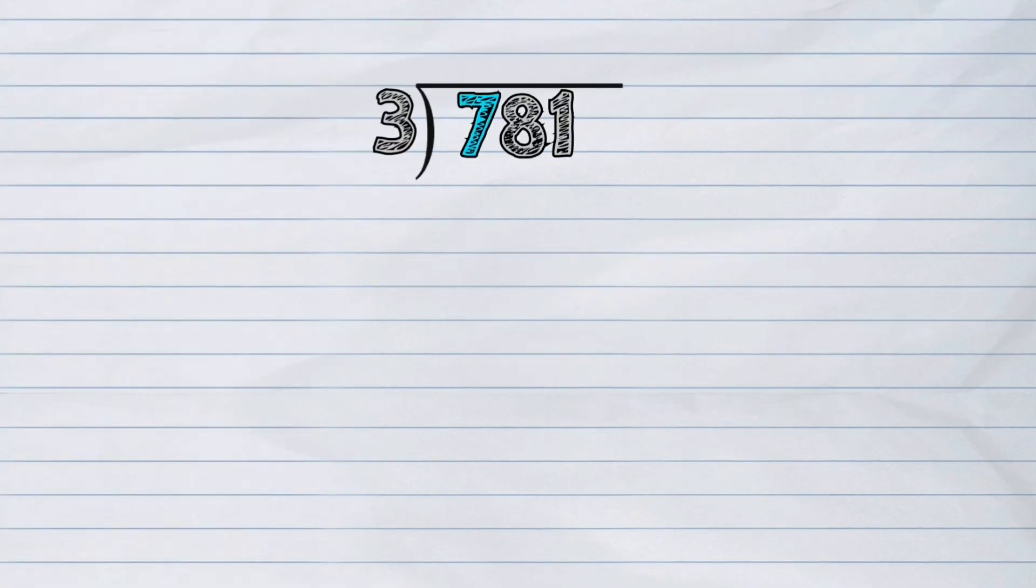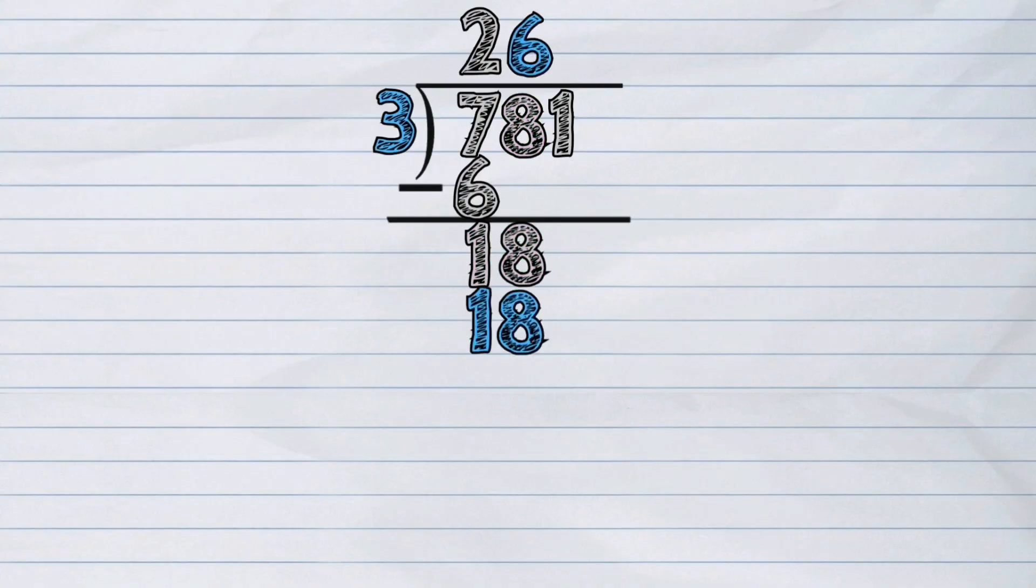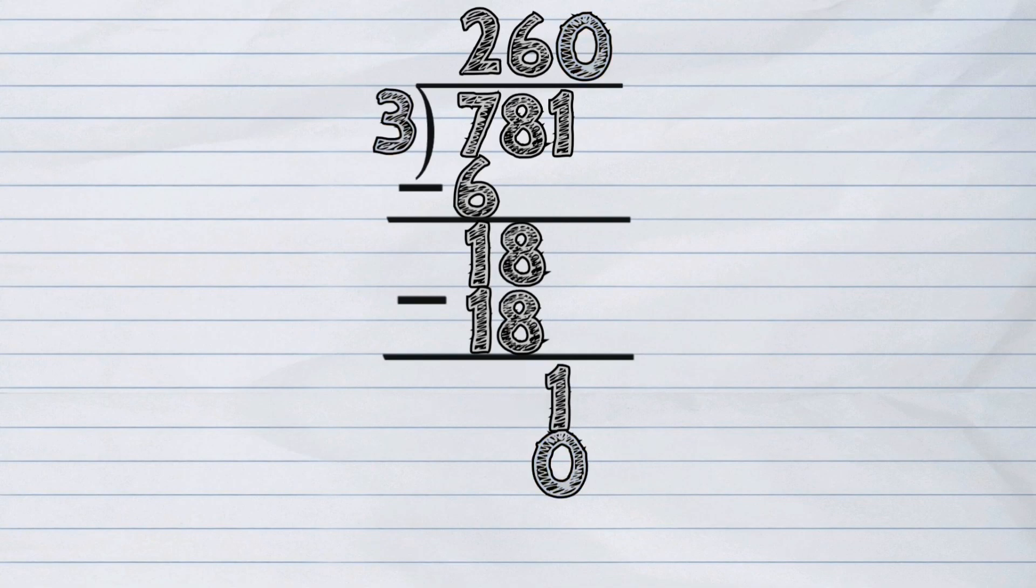And that was how we do division with remainder. Keep in mind that we always follow the four basic steps: Divide, multiply, subtract, and bring down. And the remainder should not be greater than the divisor.